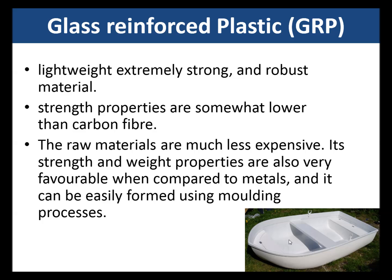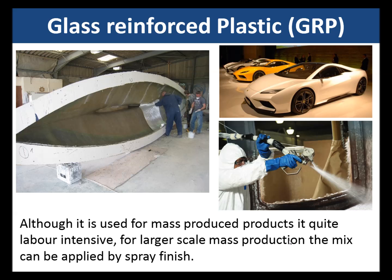Glass reinforced plastic is lightweight and extremely strong and robust. Its strength properties are somewhat lower than carbon fiber, but the raw materials are less expensive and its strength-to-weight properties compare very favorably with metals. It can easily be formed using a moulding process to make objects like a small boat. Although it is used for mass-produced products, it is quite labor intensive. For larger-scale mass production, the glass and resin can be mixed together and applied by spray.